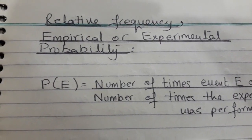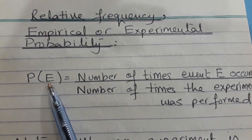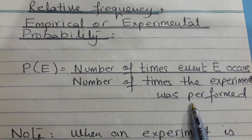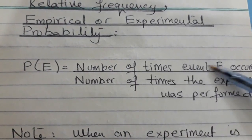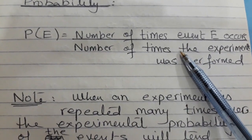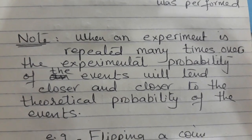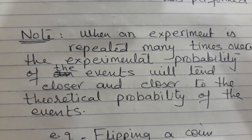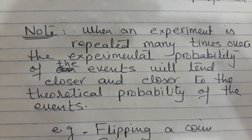Now we will look at experimental or empirical probability, also called relative frequency. The notation remains the same: P(E) = number of times the event occurs divided by number of times the experiment was performed. Here the denominator is total trials and the numerator is how many times the event occurred.